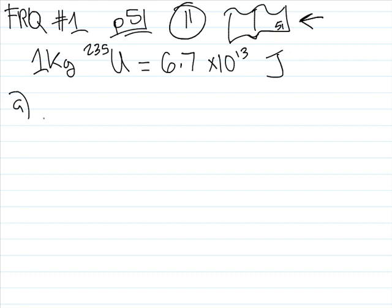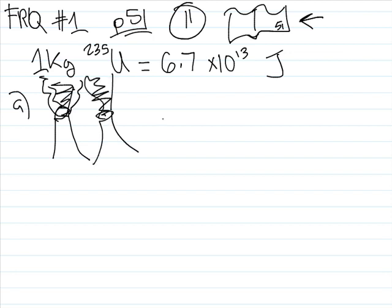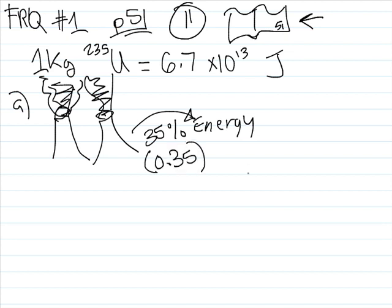Part A says assume that a nuclear power plant can convert energy from uranium-235 into electricity with an efficiency of 35%. You think about the uranium inside of the power plant. It can take uranium-235 and turn it into energy at an efficiency of 35%, or if you ever want to use a percent, you could say that's 0.35 of the original value.